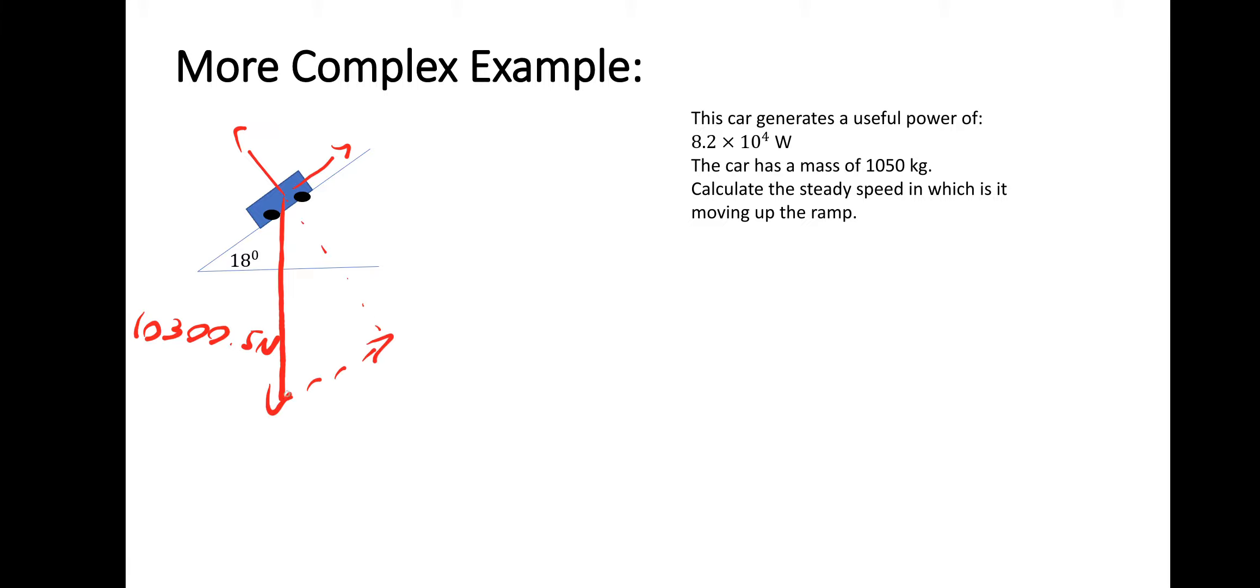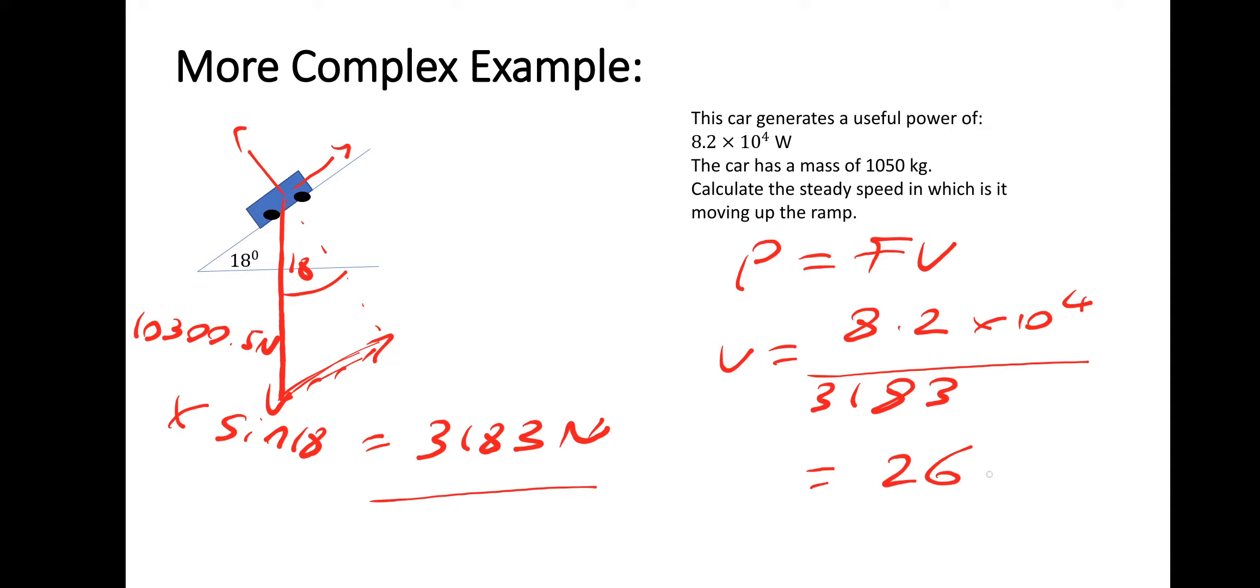We need the component parallel to the ramp. So we want this one that I've just drawn, this one. This angle is the same. To get the component parallel to the ramp, we just do the 10,300.5 multiplied by sine of 18. That gives us a force of 3,183 Newtons. When we use our equation, P equals FV, that's our force. The velocity is the power 8.2 times 10 to the 4 divided by the force, which is 3,183. Put that in your calculator and you'll get 25.8 meters per second, which rounds to 26, which is actually very fast.